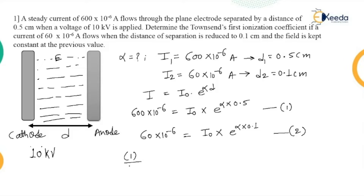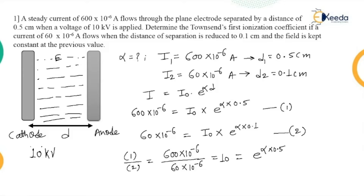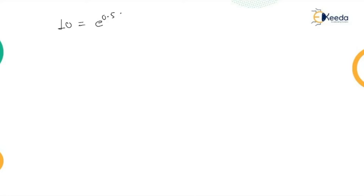Dividing equation 1 by equation 2, since 600/60 = 10, the 10⁻⁶ terms cancel. We get 10 = e^(α × 0.5) / e^(α × 0.1) = e^(0.5α − 0.1α) = e^(0.4α).